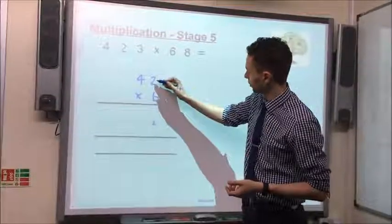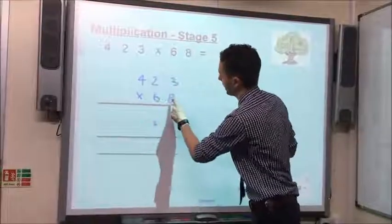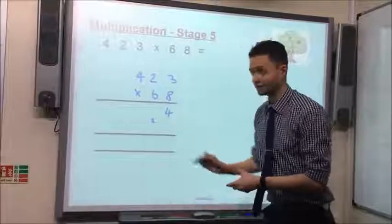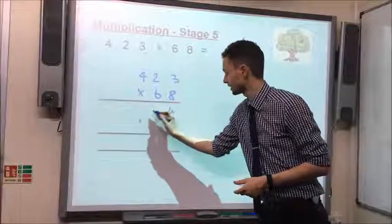Then we've got 8 multiplied by 2, so we're moving across. 8 multiplied by 2 gives us 16. Add the 2 we've carried over gives us 18.